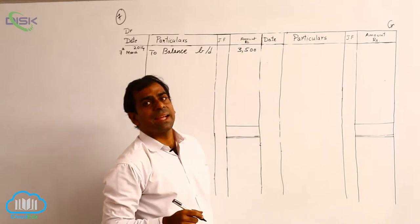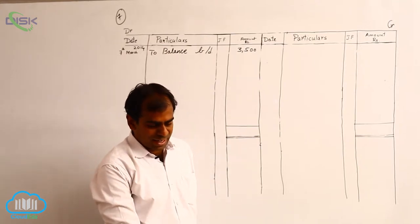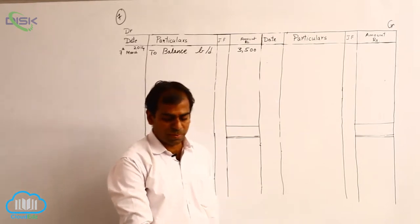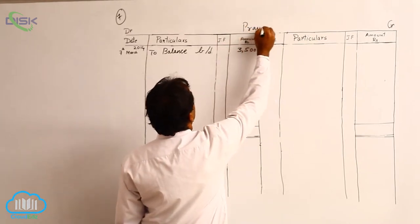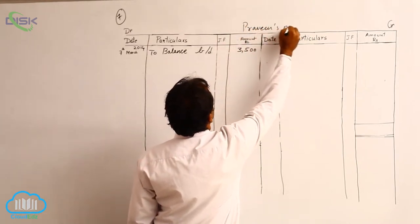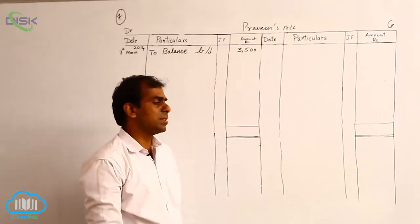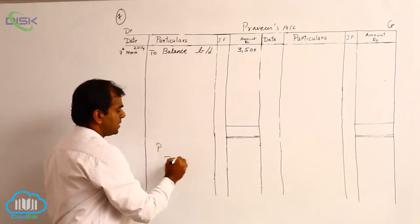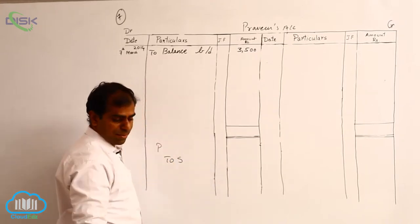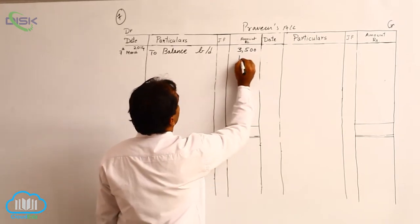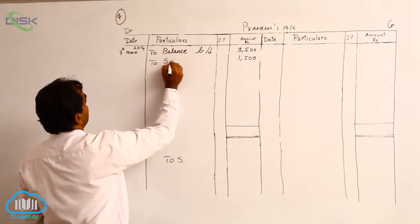The next transaction is on 7th March again — sold goods to Praveen for 1500. The journal entry being Praveen to sales, because Praveen is the receiver of the goods sold by us. So Praveen's account is debited with 1500. I am entering 1500 in the amount column on the debit side, reason being sales.